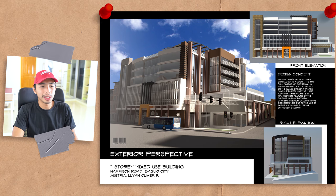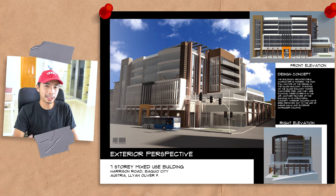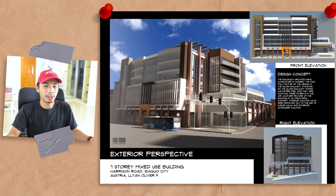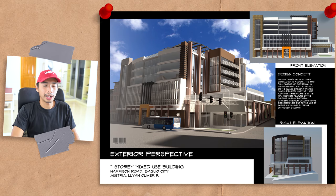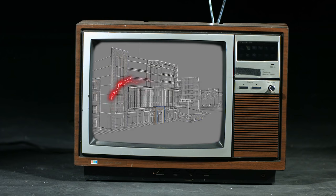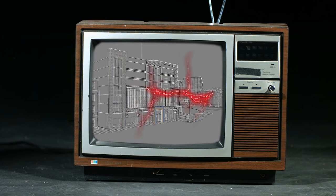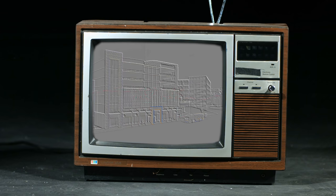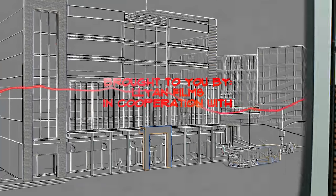Moving on to my third year projects. Here we have the Harrison project — I improved a little bit in rendering. The architectural style here is what I call 'chop suey style' because I just took a bunch of architectural styles, mixed them together, and it turned out really bad. Here we have my first attempt at doing a walkthrough with cheesy music — it honestly looks like it was done by a 13-year-old.